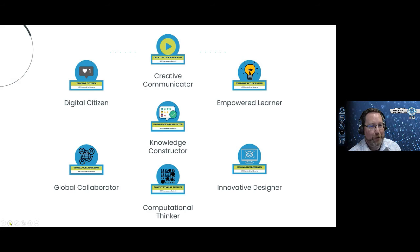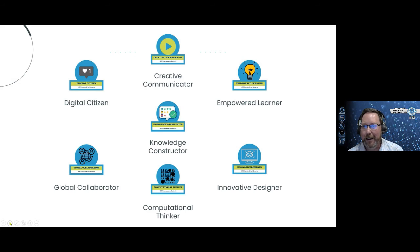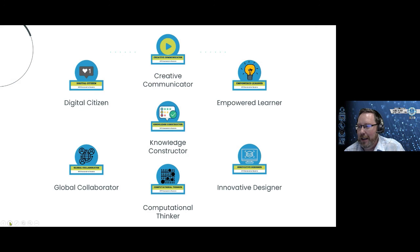There are seven ISTE standards and we have seven upcoming 'How Did They Do That Live' events and seven upcoming e-newsletters in the school year. We'll be looking at the digital citizen, global collaborator, creative communicator, empowered learner, innovative designer, computational thinker, and knowledge constructor throughout the school year.